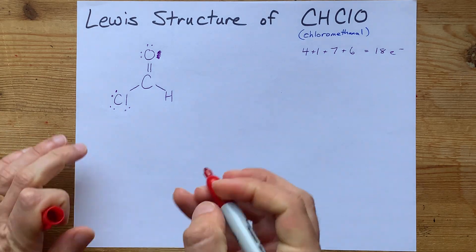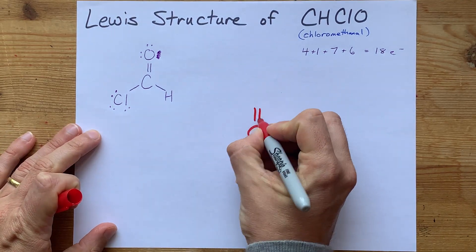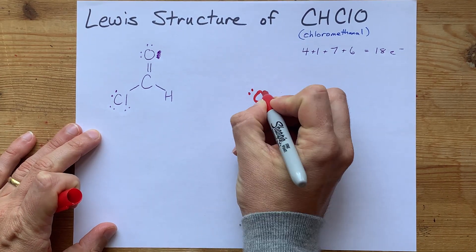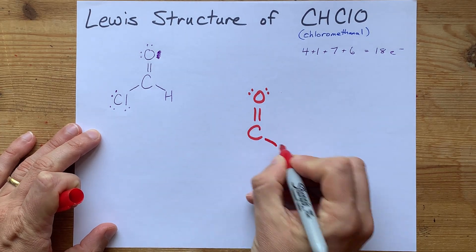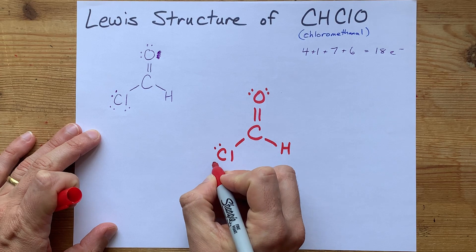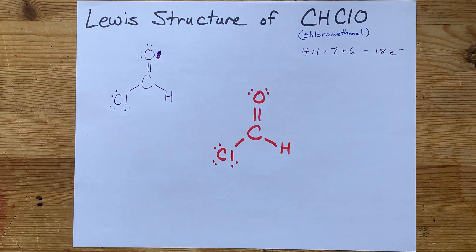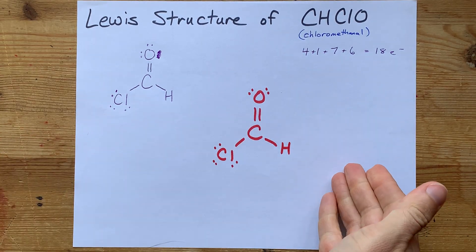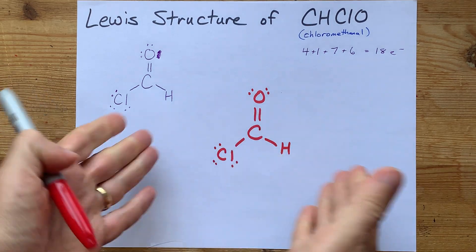My final structure here is carbon double bonded to oxygen, which has two lone pairs, single bonded to an H, and single bonded to a Cl, and the Cl has three lone pairs around it. That's the Lewis structure. We did it. Congratulations.